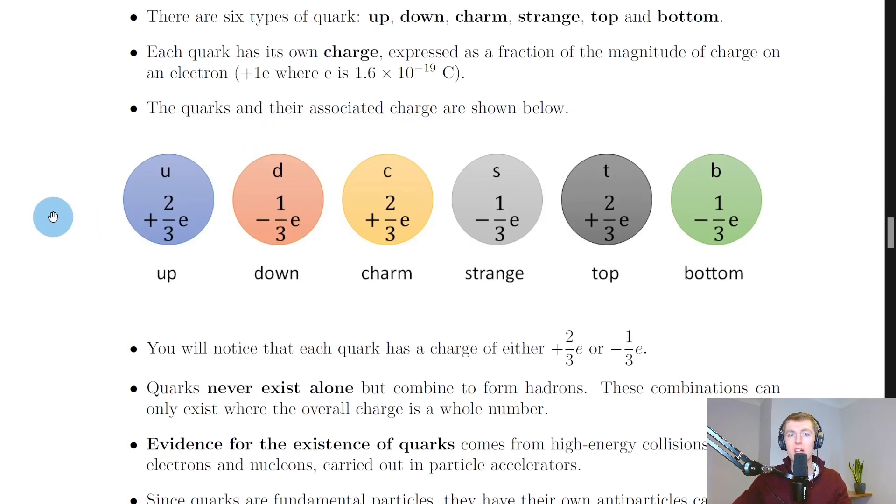Of electron charge e (but sometimes you will be given them in questions in the exam). In the order of up, down, charm, strange, top, and bottom, you can see the charge goes in a pattern: plus two-thirds e, then minus one-third e, then plus two-thirds e, then minus one-third e, and so on. You need to remember that an up quark has a charge of plus two-thirds e, but the